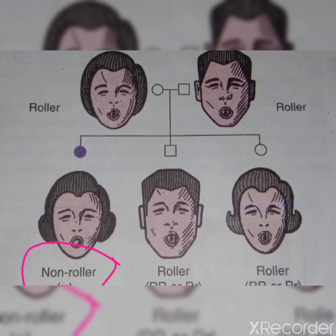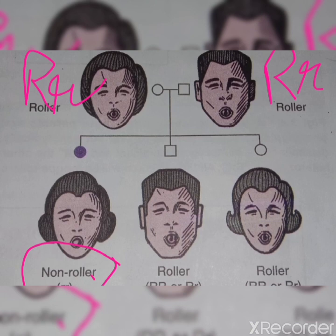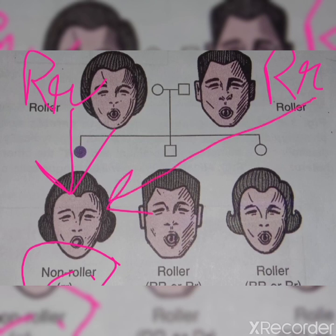When we talk about the non-roller daughter, her genotype in the family chart is small r small r. We know that one allele is from mother and one is from father, so each of the two parents must be heterozygous — capital R small r. Capital R represents the dominant gene and small r the recessive gene. Conclusion: each of the two parents is heterozygous, capital R small r.